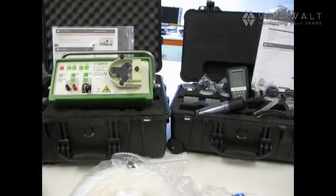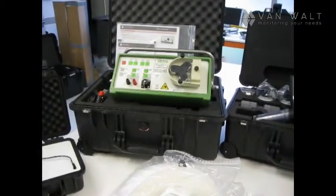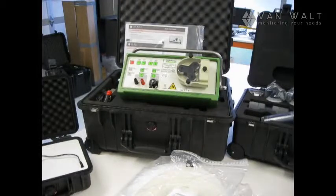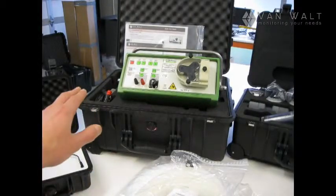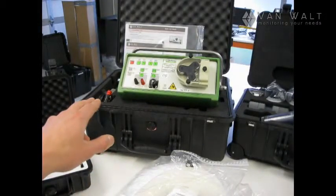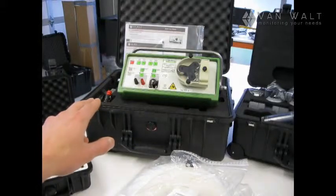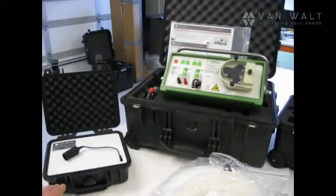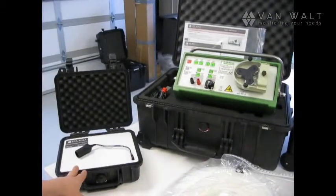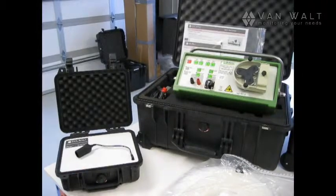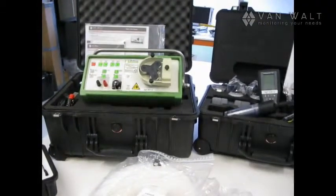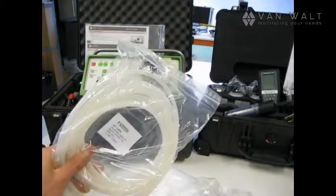First of all I want to show you some of the goodies available from us for low flow sampling. Let's start with a peristaltic pump and the pump comes with a charger and with an adapter for a cigarette lighter. Also we have available an additional battery pack and we have tubing available, silicon tubing.